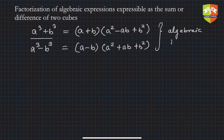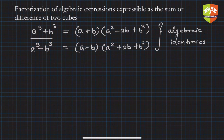These are all called algebraic identities. To know more about these identities you can check the series on algebraic identities in the same coursework. Now, any expression in this form will be easily factorizable.